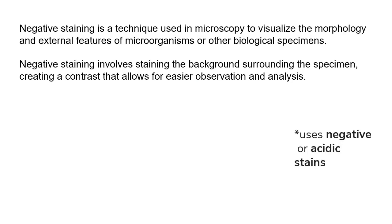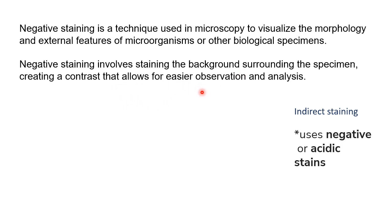So what is negative staining? This is another staining technique used in microscopy to visualize the morphology and external features of microorganisms or any other biological specimens. This is actually an indirect staining technique because it uses negative or acidic stains. It involves staining of the background surrounding the specimen, not the specimen itself, creating a contrast that allows easy observation and analysis.